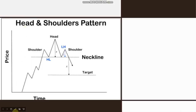This is how a Head & Shoulder Pattern looks like. The market is in an uptrend, going up, then at this point the market starts going down. After taking support at this particular point, the market goes up again, breaks the previous high, and goes till here. From here, market comes down and takes support here at the previous support level.